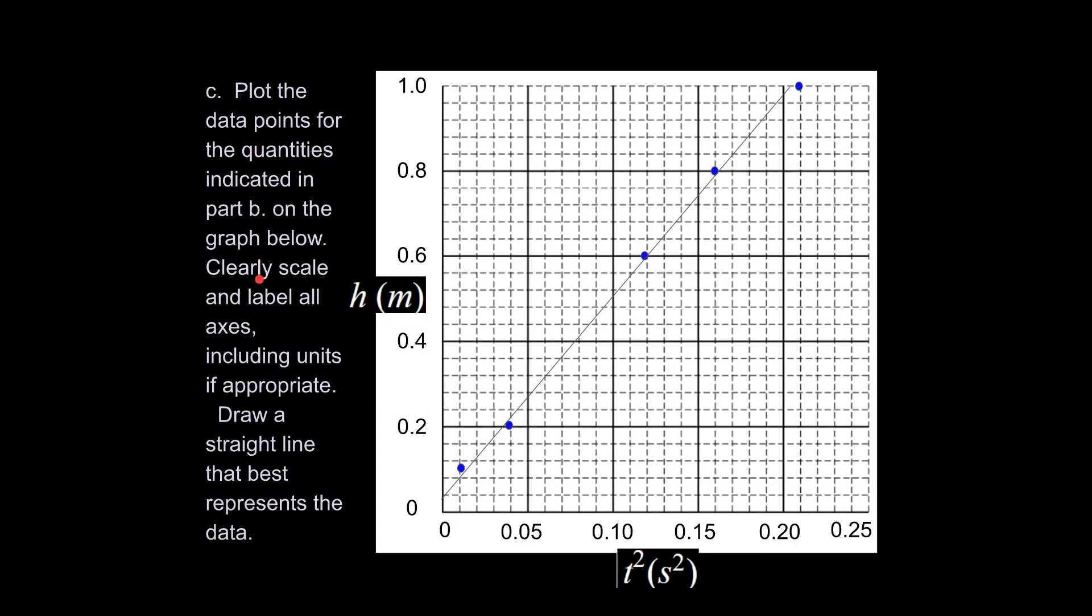It says plot the data points for the quantities indicated in part B on the graph below. Clearly scale and label all axes, including units as appropriate. Draw a straight line that best represents the data. First of all, T squared is no problem. You go ahead and graph the T squared and do it proportionally on the bottom. Here, what I did is I graphed H. And looking back on it, that was a mistake. I did that because the College Board graphed H and it's fine. You can get the right answer with this. It's just not as easy to follow how to do a conversion at the end. It makes more sense to graph 2H in my opinion. We'll follow what the College Board has done and I'll explain.